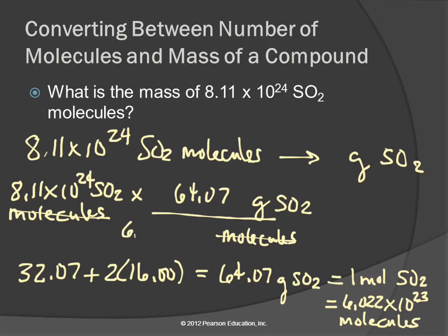and that's equivalent to Avogadro's number of SO2 molecules. So 8.11 EE24 times 64.07 divided by 6.022 EE23 equals... Again, with the three sig figs, 863.